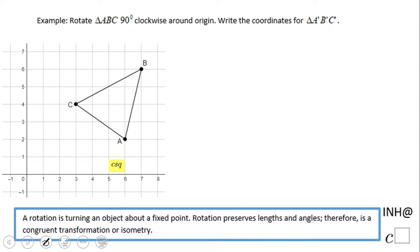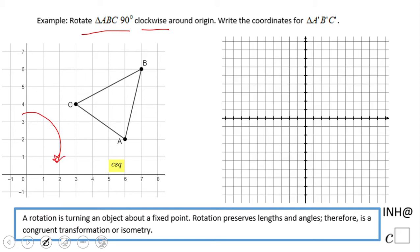Welcome. In this example we're going to look at how to rotate a triangle 90 degrees clockwise. Remember, clockwise means like this.